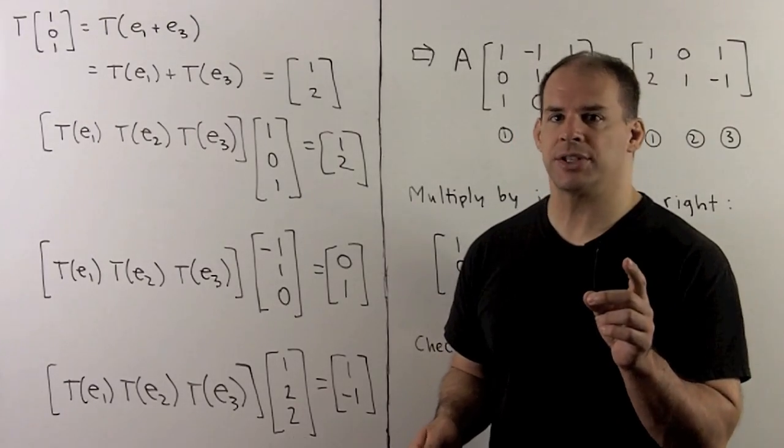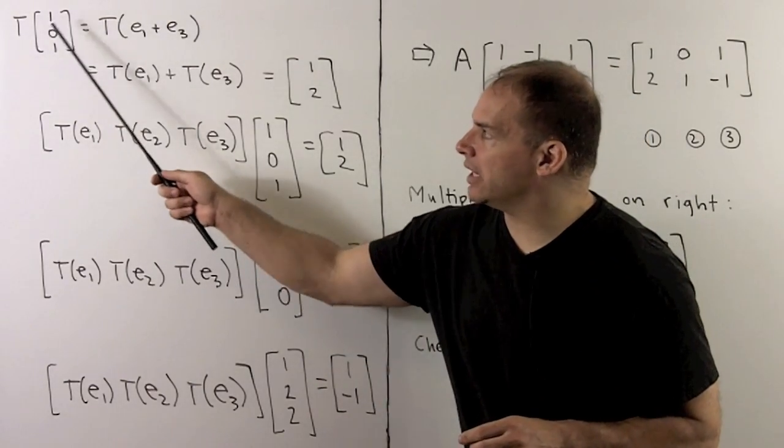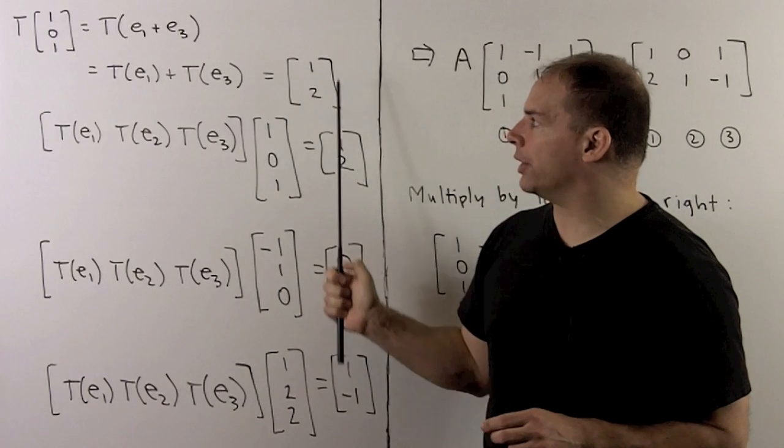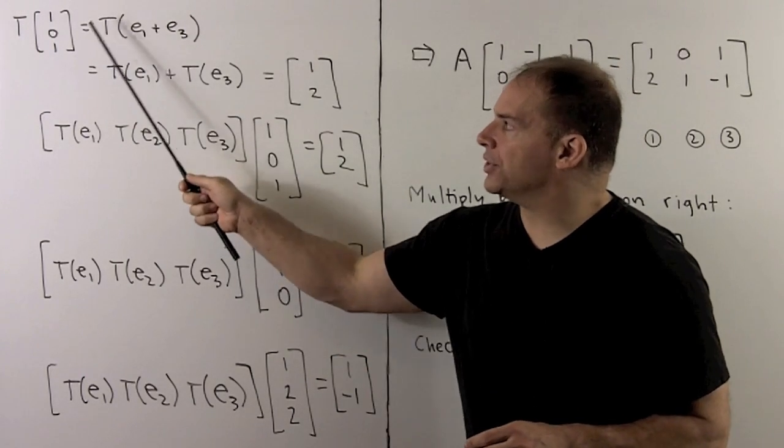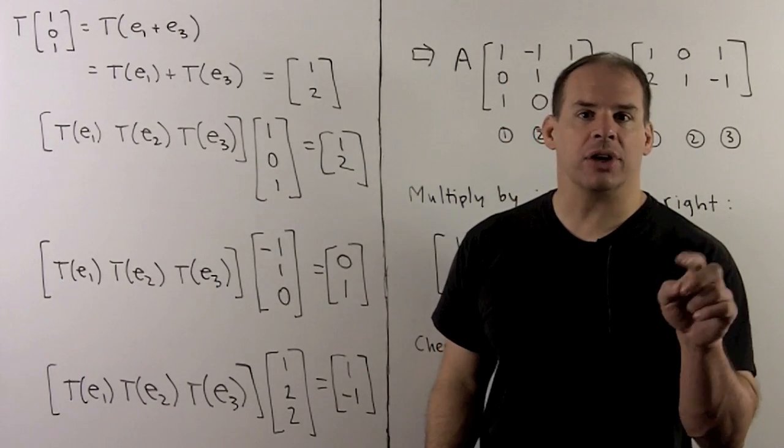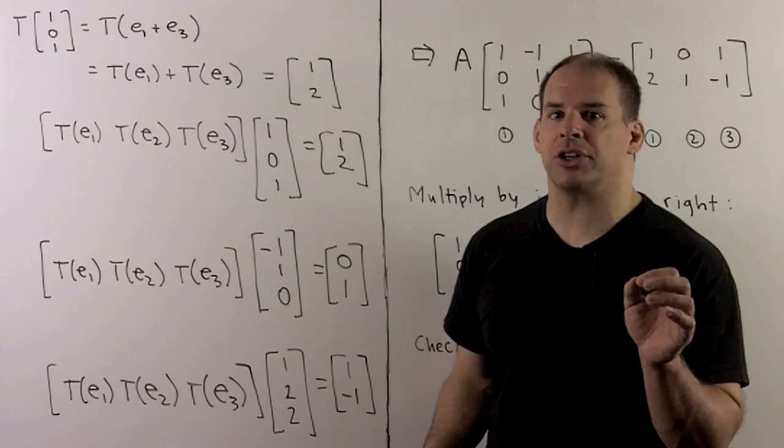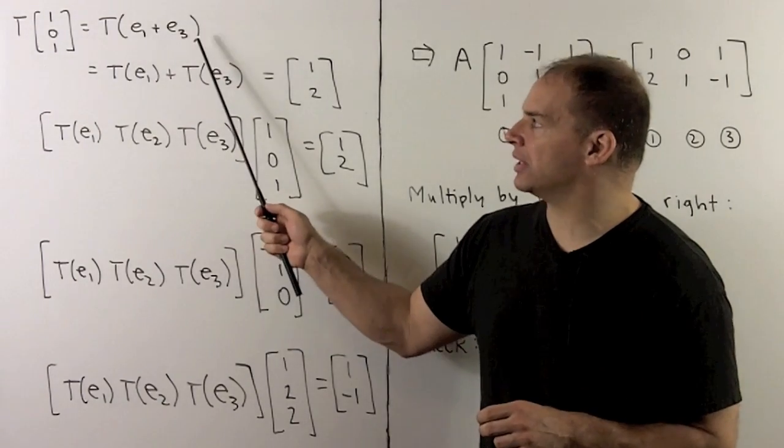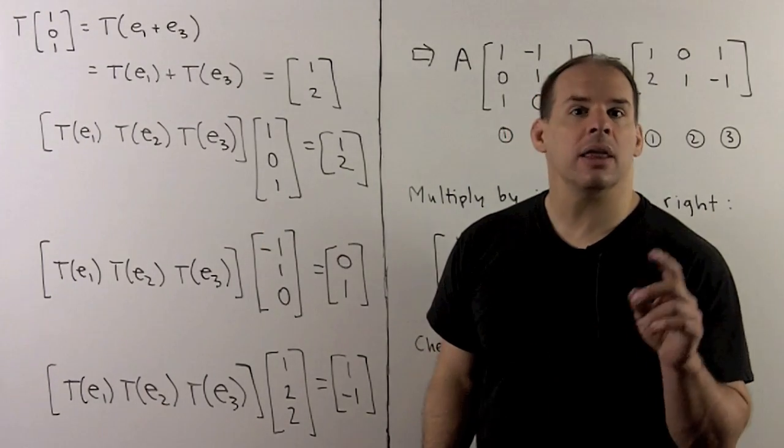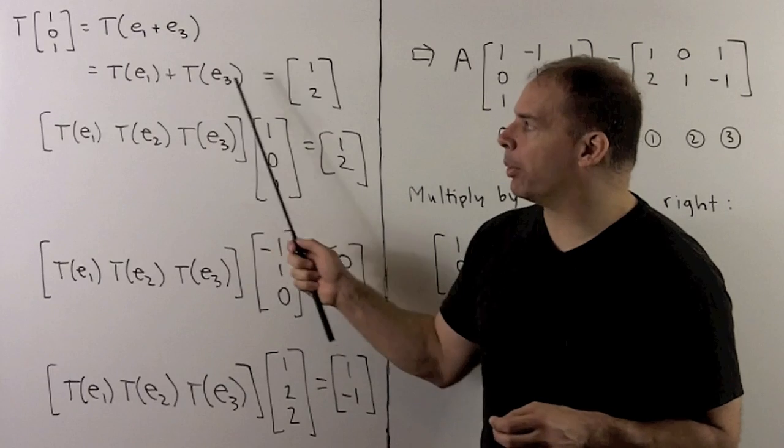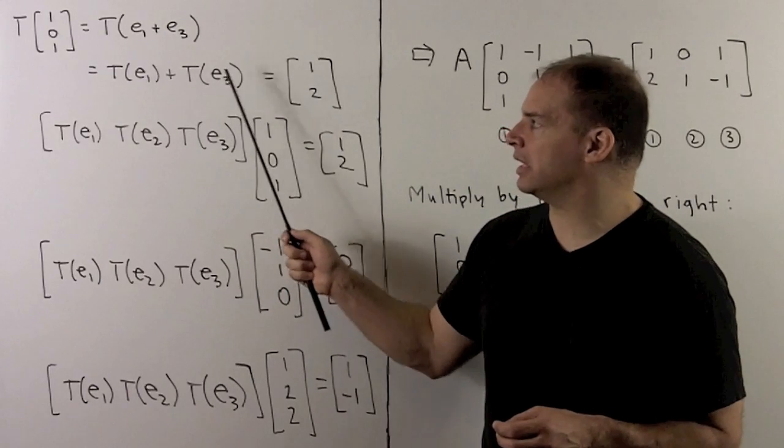To interpret our assumptions, first we have T of (1,0,1) is equal to (1,2). (1,0,1) provides a linear combination of the standard basis vectors as E1 plus E3. Then by linearity, I could pull that apart. So TE1 plus TE3.